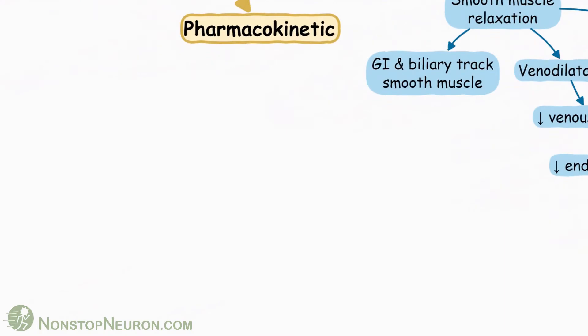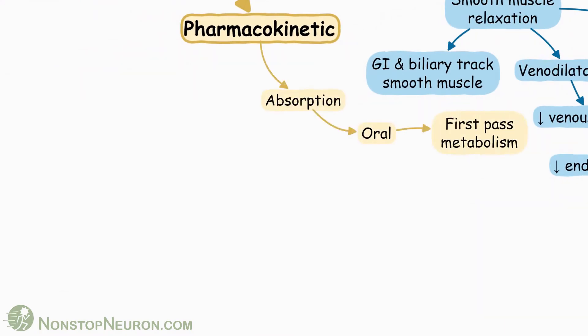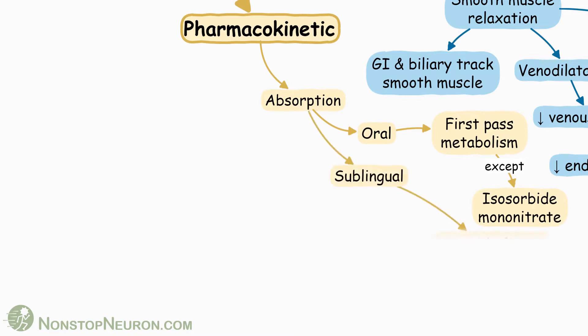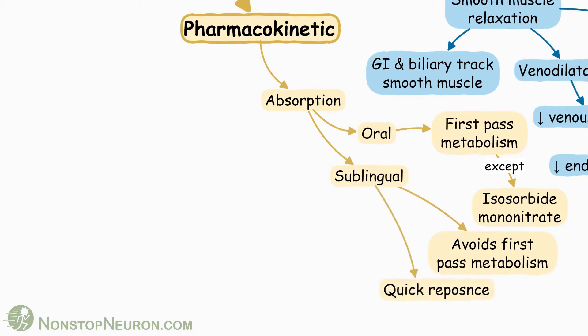Now let's talk about pharmacokinetics — first, absorption. When given by oral route, they undergo extensive first-pass metabolism in the liver. An exception is isosorbide mononitrate, which undergoes very little first-pass metabolism. The sublingual route avoids first-pass metabolism and produces a quick response.